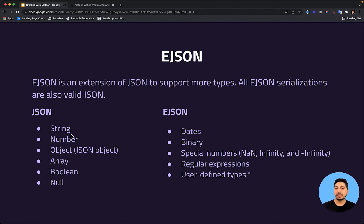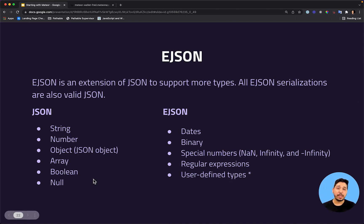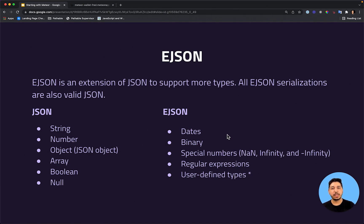If you remember, when you are creating an application using typically HTTP, you can transfer JSON between client and server — meaning you can transfer data that can be string, number, objects, array, booleans, or null. Using Meteor and the DDP protocol, we can have other types of data, which is really cool. For example, using dates, you can just send a date using a method and you will receive a date on the server side — you don't have to be transforming this kind of data.